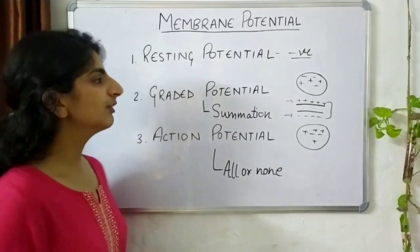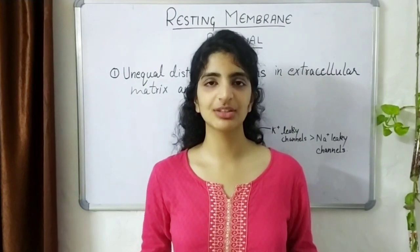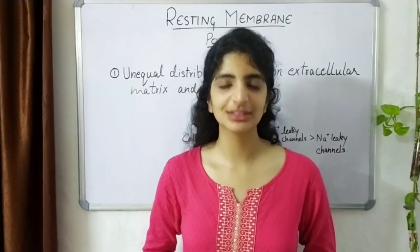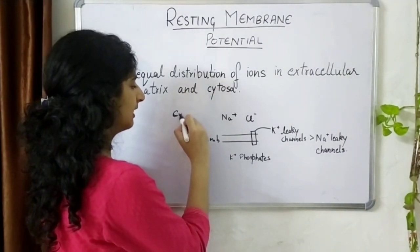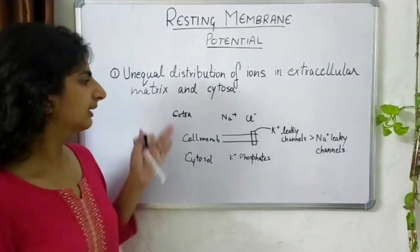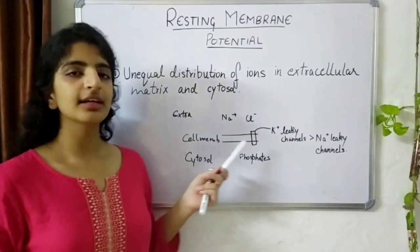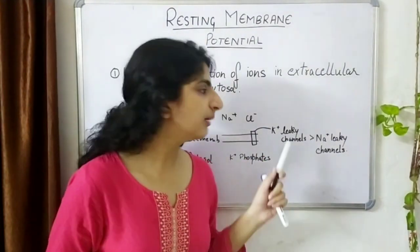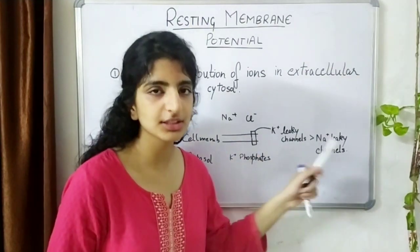Now we should understand each of these in detail and know the difference between a graded potential and an action potential. The resting membrane potential — where the inside of the cell is more negatively charged — is maintained by various factors. The first is an unequal distribution of ions: the outside of the cell is rich in Na⁺ and Cl⁻, while the inside is richer in K⁺ and phosphates. Also importantly, K⁺ leaky channels in the membrane are far more numerous than sodium leaky channels.